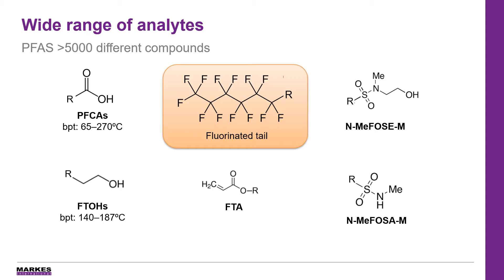We chose 11 perfluorinated carboxylic acids and 4 fluorotelomers, which are the volatile precursors to the PFCAs. It's key to note that techniques used for PFAS analysis from water, for example LC-MS, struggle with these volatile species with a chain length below C8 and specifically classes such as fluorotelomer alcohols. We also added some perfluoroalkane sulfonamides and sulfonamide alcohols, and then added a semi-volatile fluorotelomer acrylate.